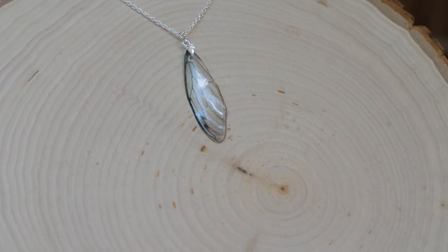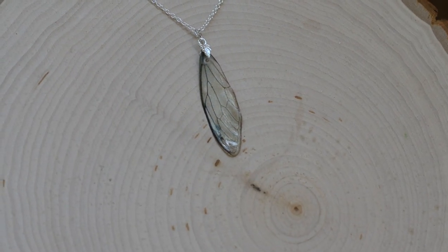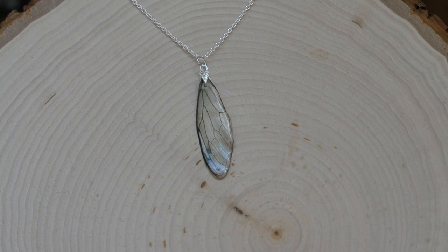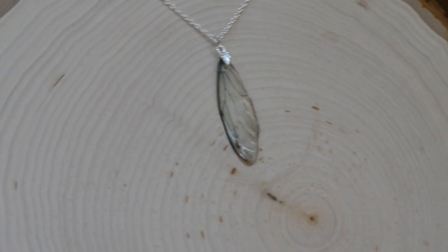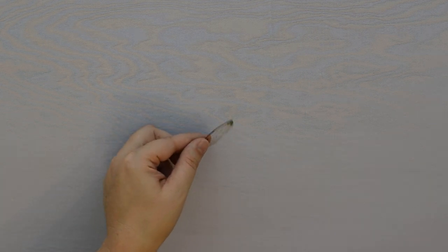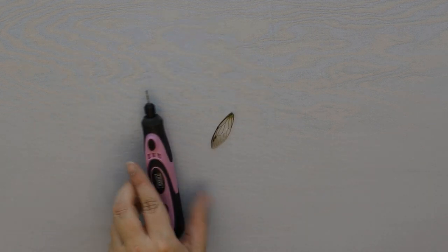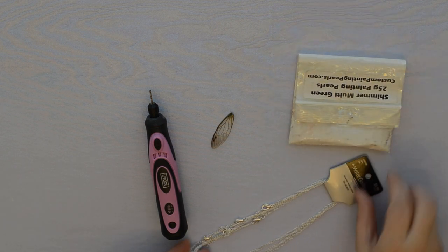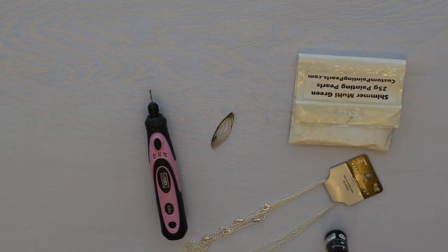Hey everyone, today I'm going to teach you how to make this real cicada wing preserved resin necklace. If you'd like to learn how, keep watching. You'll need a real cicada wing, a drill, some mica powder, a silver chain